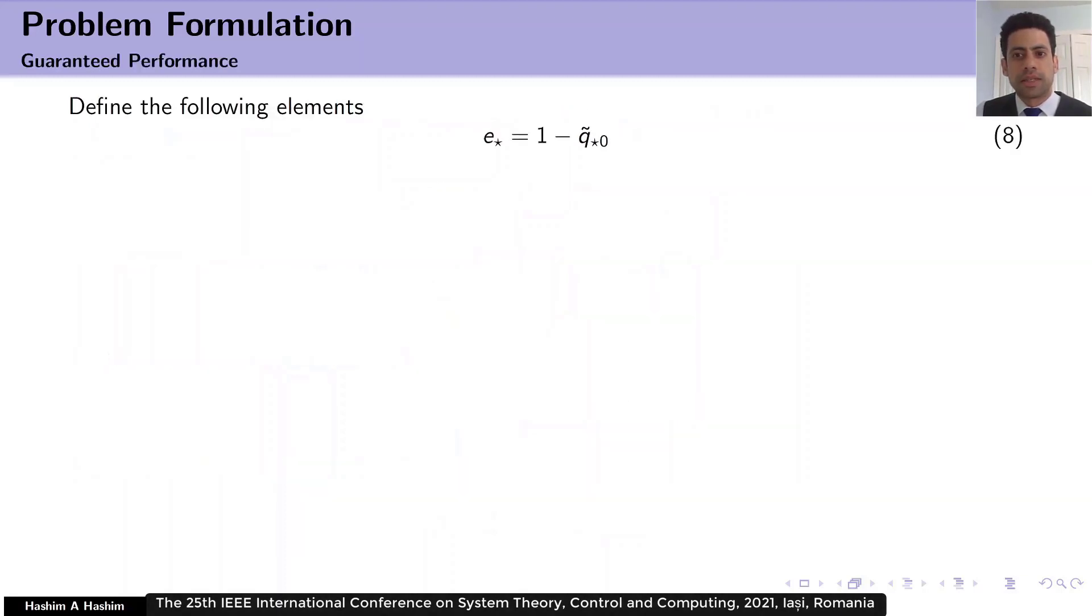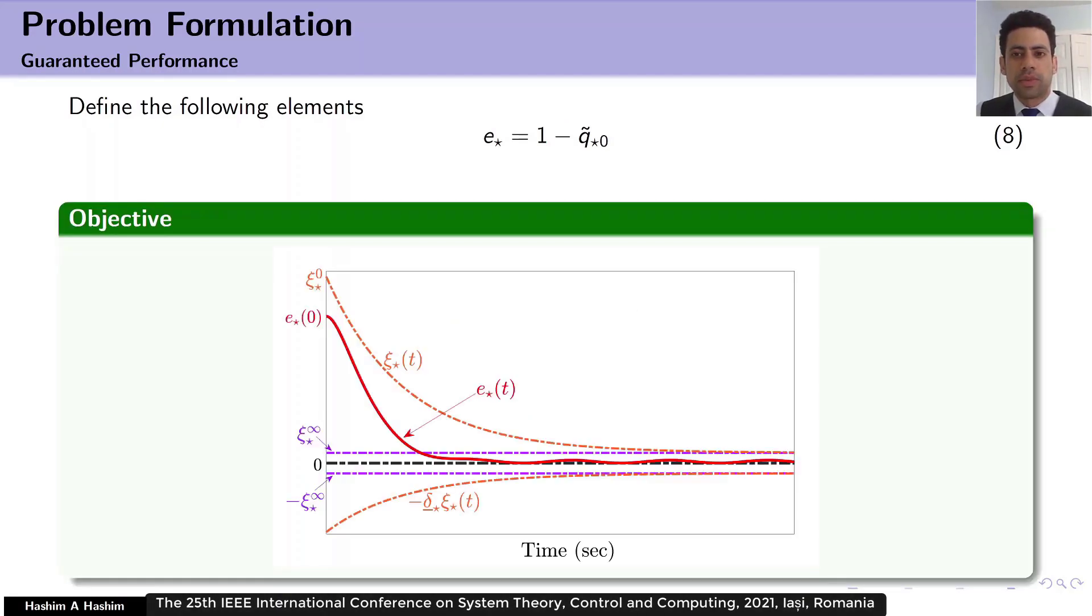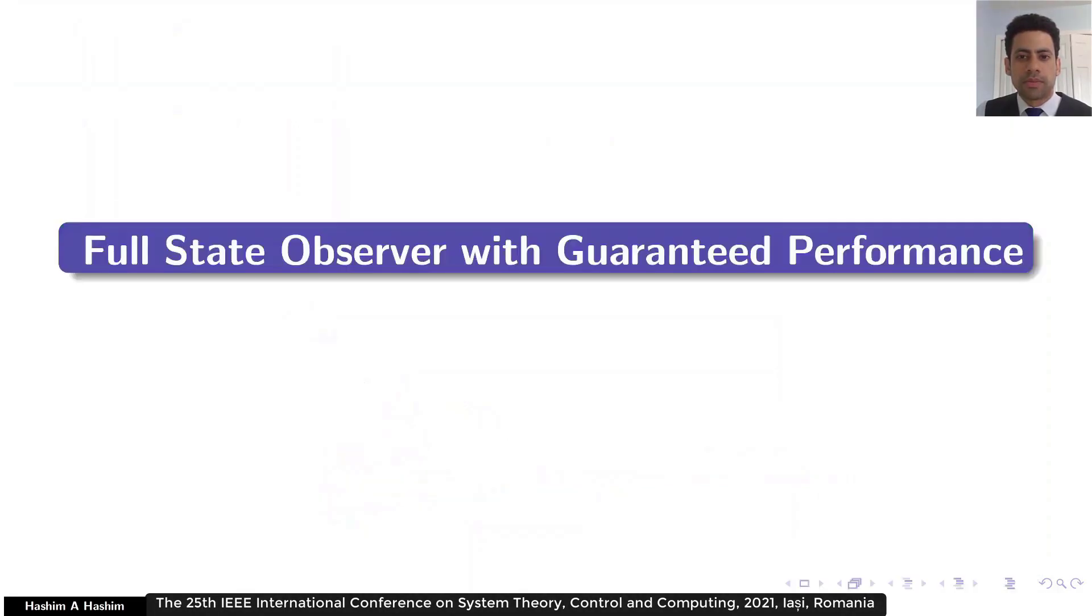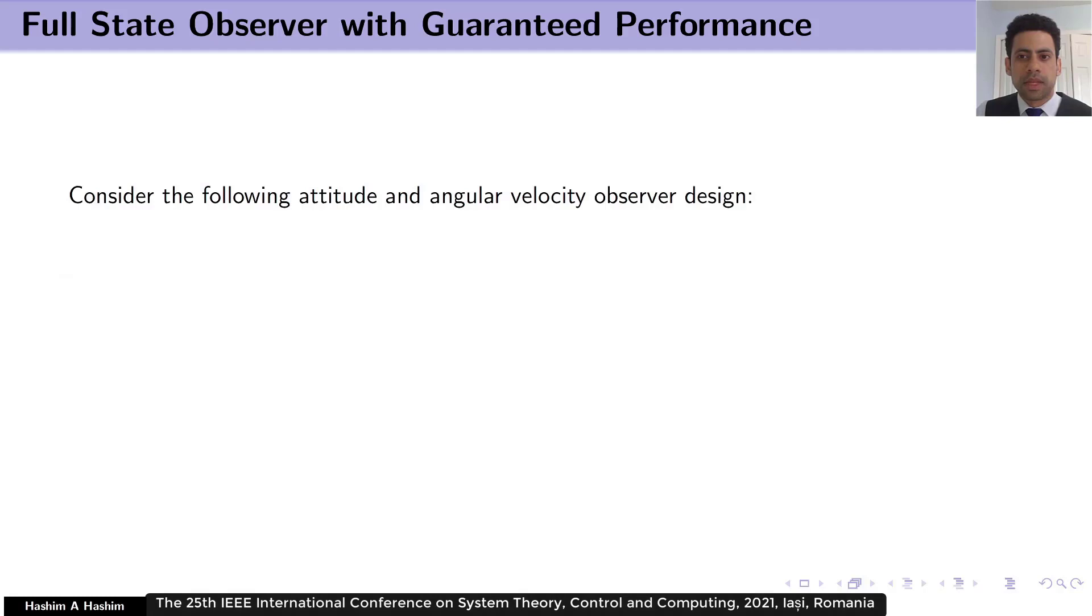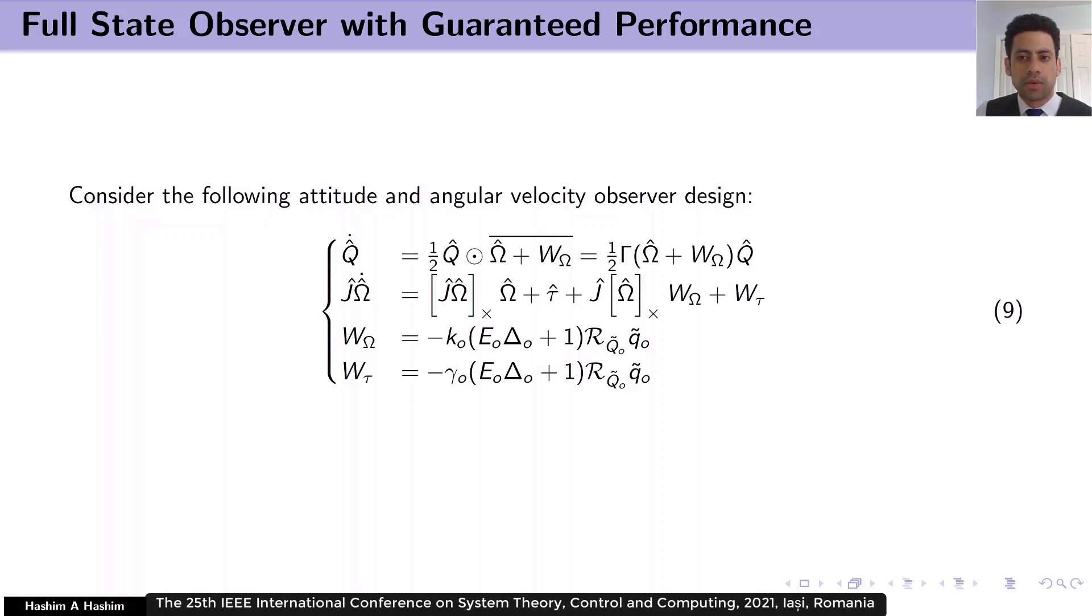Now, let's switch gears and discuss the concept of guaranteed performance. The objective of guaranteed performance is to force the error to start within non-large set and decay systematically and asymptotically to settle within a non-small set. In order to achieve this objective, we need to define the following elements. Full state observer with guaranteed performance. Taking into consideration guaranteed performance, let's look at the following attitude and angular velocity observer design.